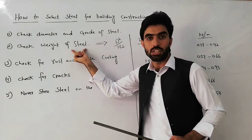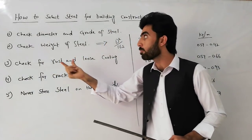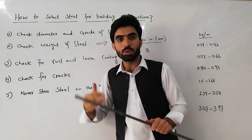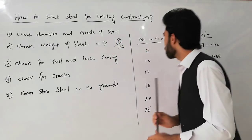The second point is to check the weight of steel. You can check the weight of steel with the help of its diameter. For example, suppose you have a steel bar — here is the list which shows the weight of steel by diameter in mm and weight in kg per meter.